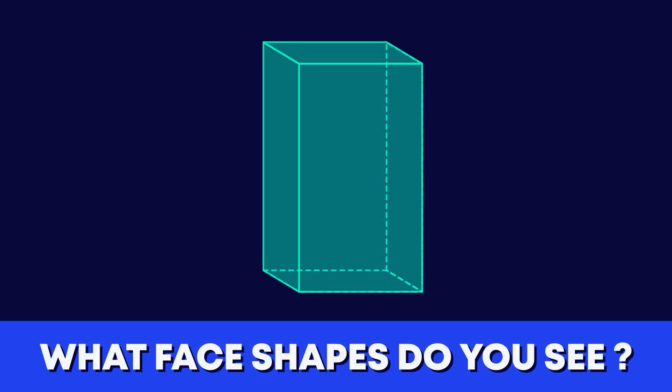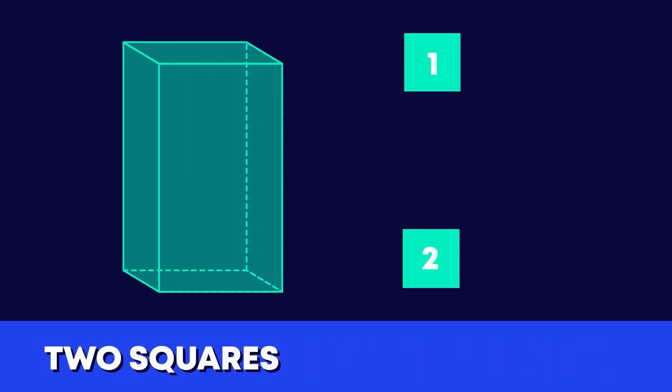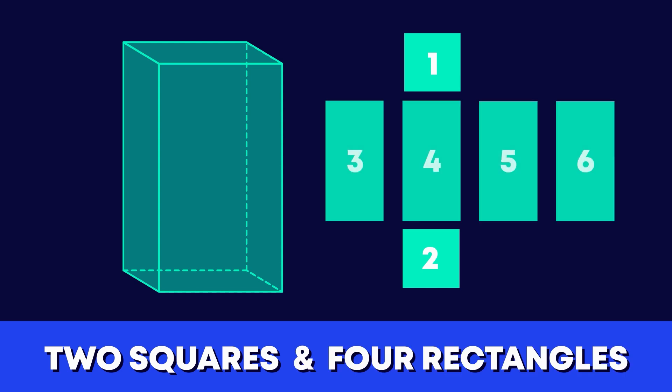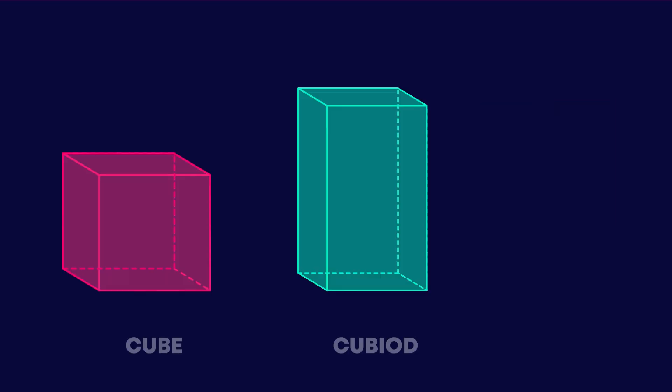What shapes can you see on the cuboid? There are 2 square faces opposite each other and 4 rectangle faces. Great work everyone!